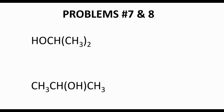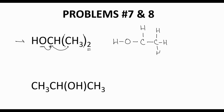Problems 7 and 8. For the top molecule, we skip the hydrogen and go straight to the oxygen. We fill in that hydrogen, then the oxygen is attached to a carbon. That carbon has a hydrogen, and the parentheses indicate two branched CH3 groups coming off of it. All carbons have four bonds and full octets. The oxygen only has two bonds, so it needs two lone pairs — four more electrons — to satisfy the octet rule.